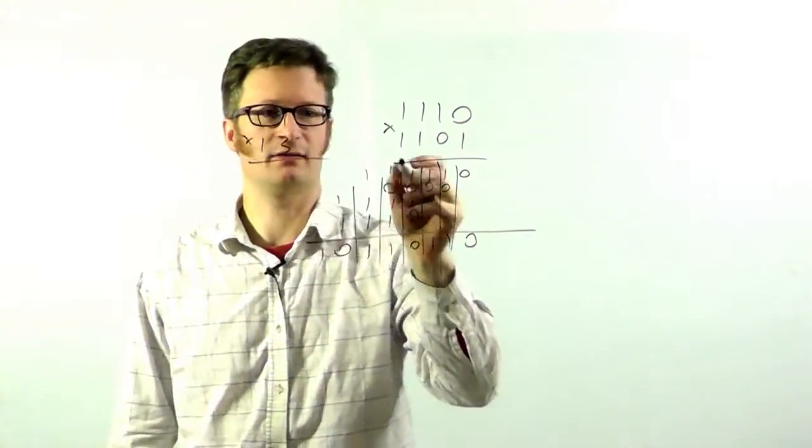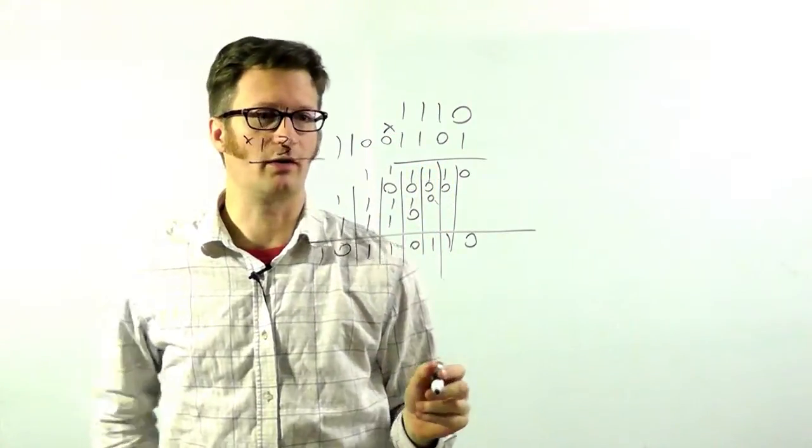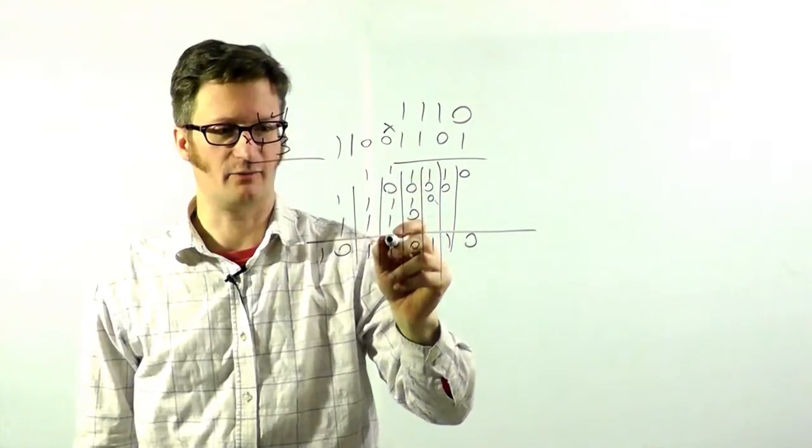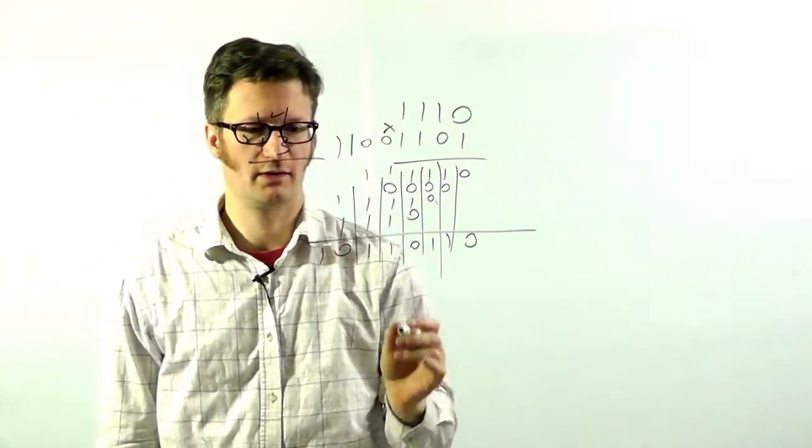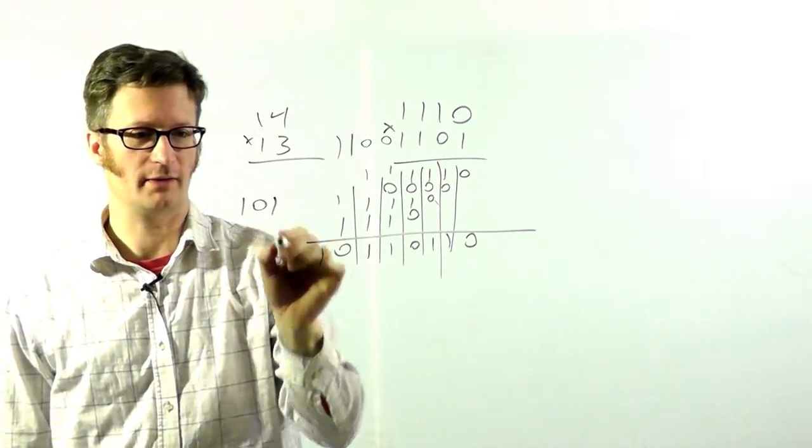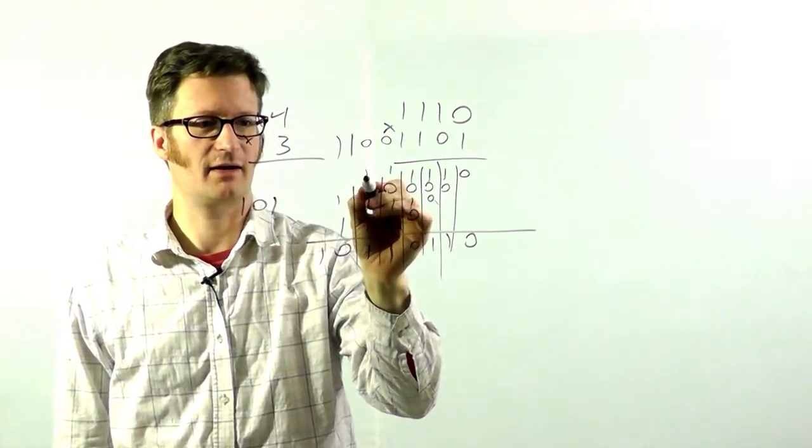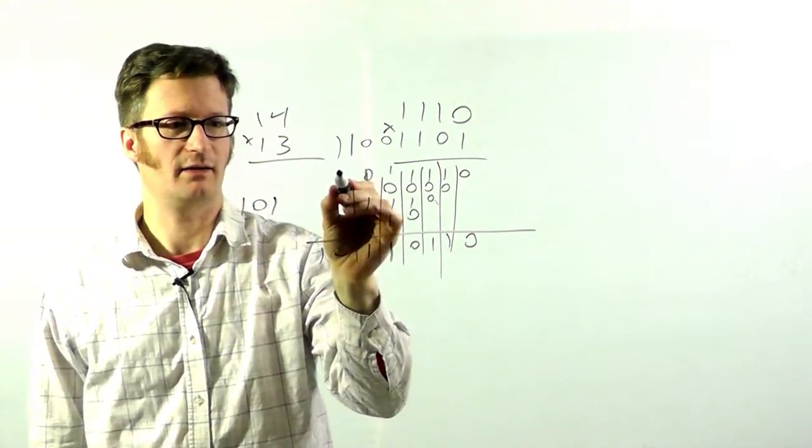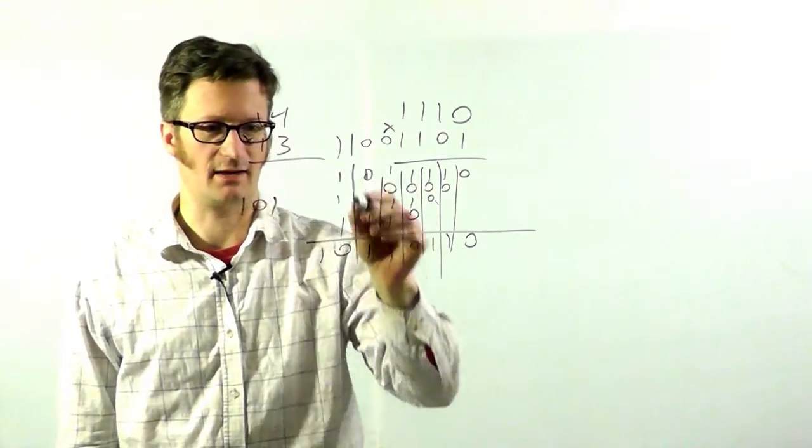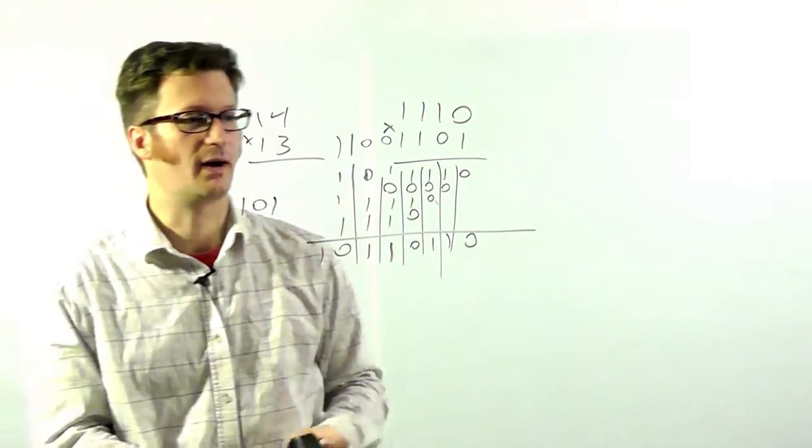Let's say we had a longer number down here. So we had a lot more columns. And we ended up, let's say we had 5, 5 1's in this column. The way you deal with that is 5 in binary is 101. So we'd end up with a 1 down here. We would carry a 0 and a 1. So that these would be in their respective columns. And then we'd just add it just like normal. So that's all you have to do when multiplying in binary.